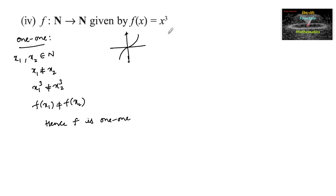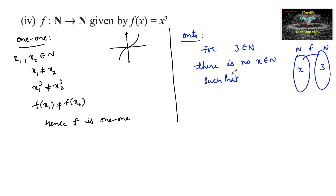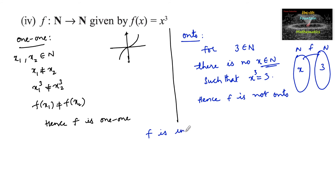But in the case of onto: for 3 ∈ ℕ in the codomain, there is no x ∈ ℕ such that x³ = 3. There is no natural number whose cube is 3, so 3 does not have any preimage. Hence f is not onto. We can say finally that f is injective but not surjective.